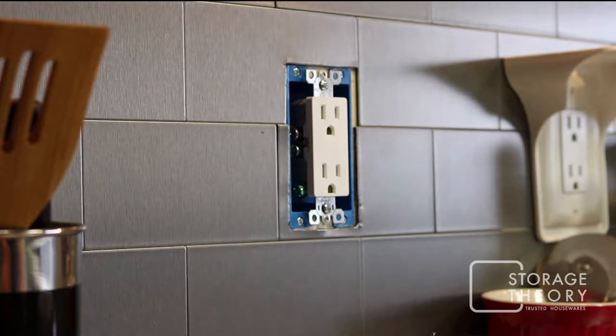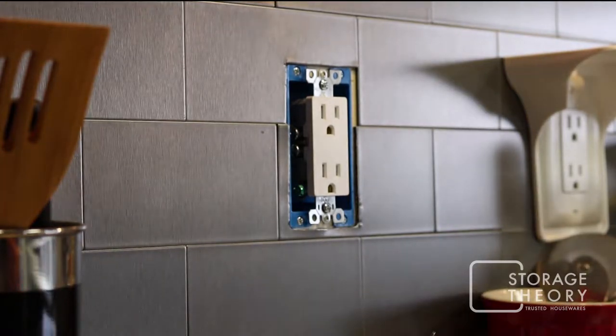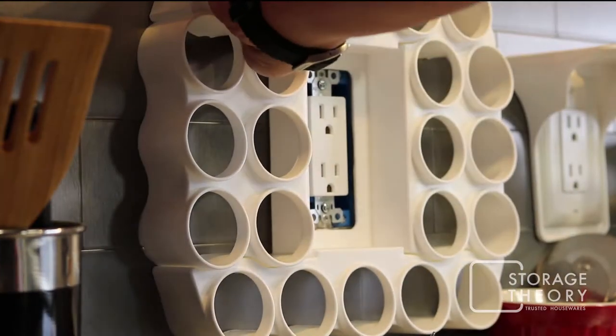You simply remove your outlet cover, place the Cafe Wall Caddy, and reinstall the outlet cover.